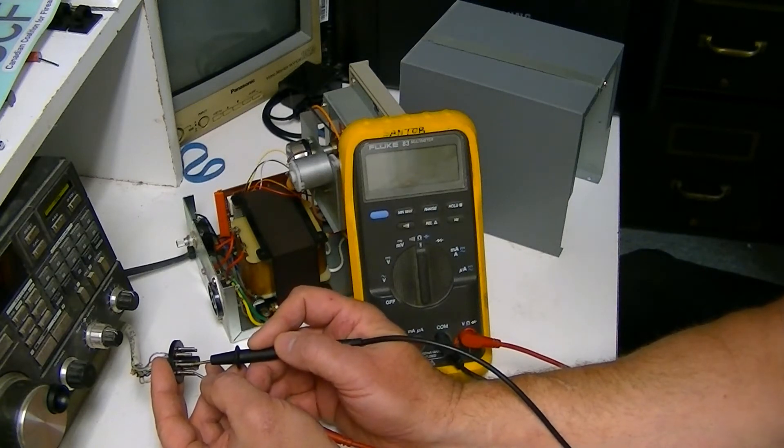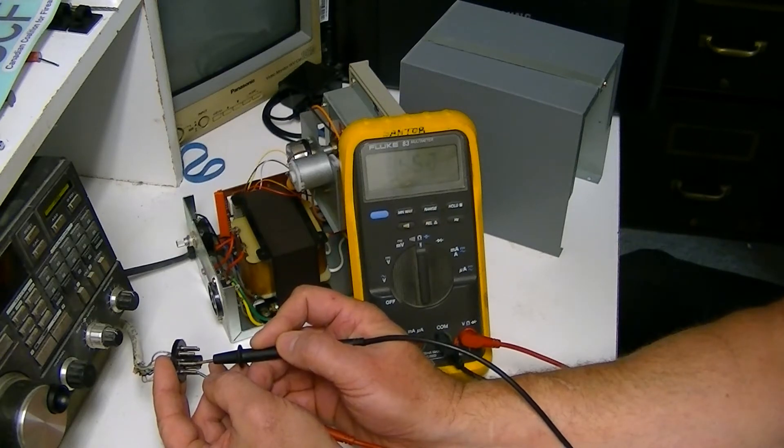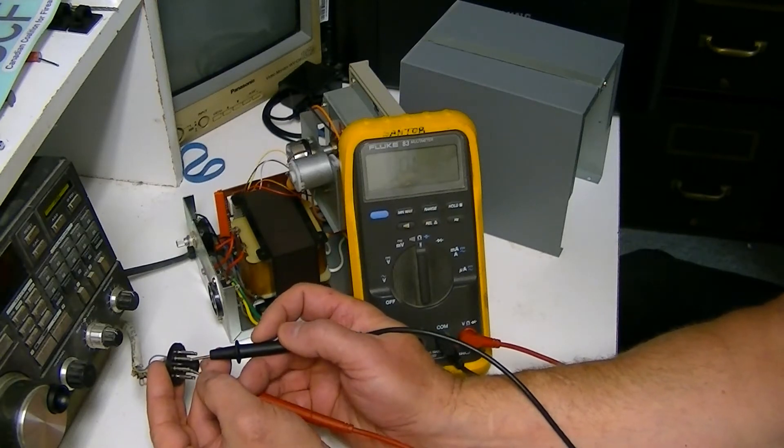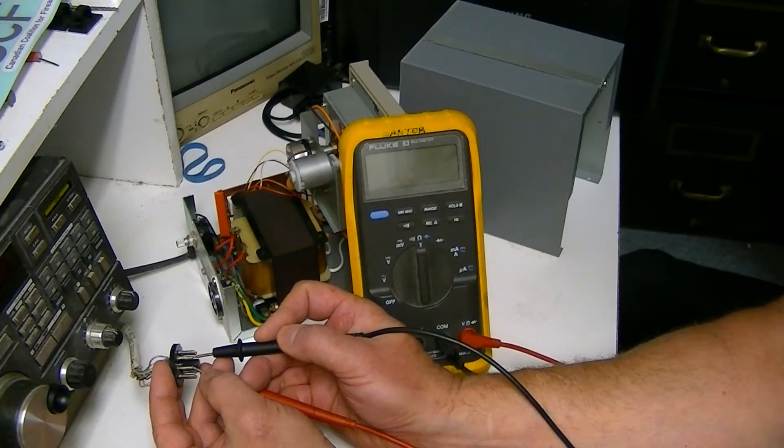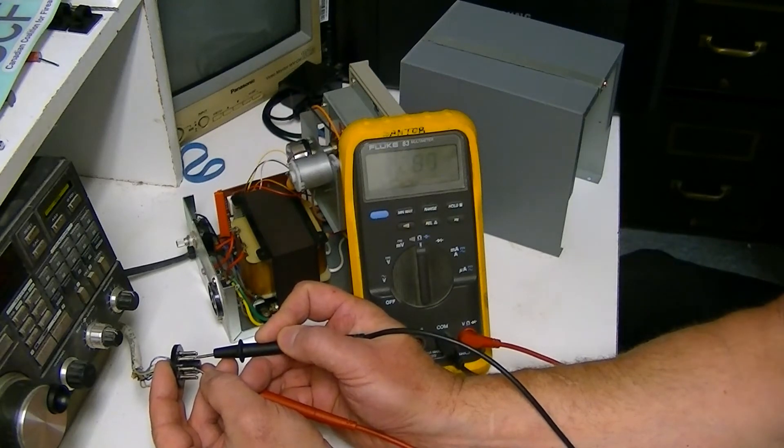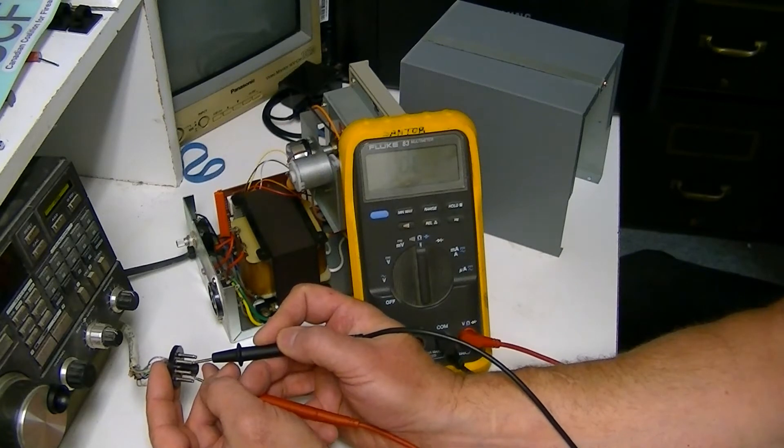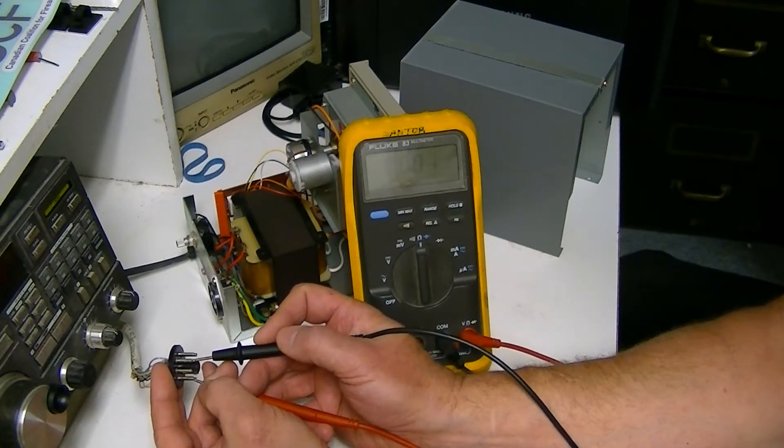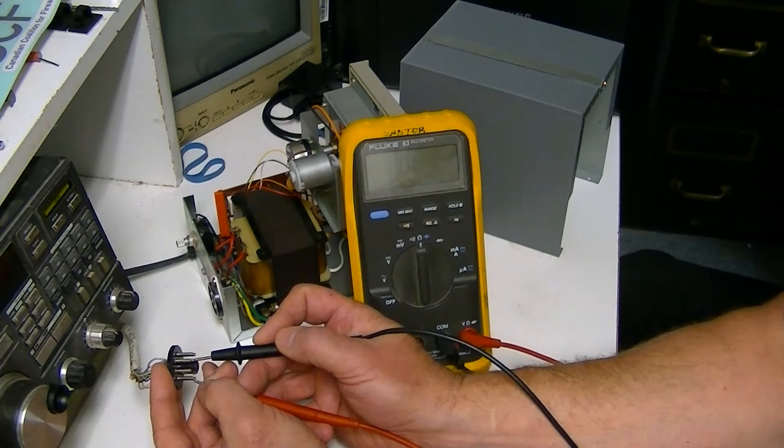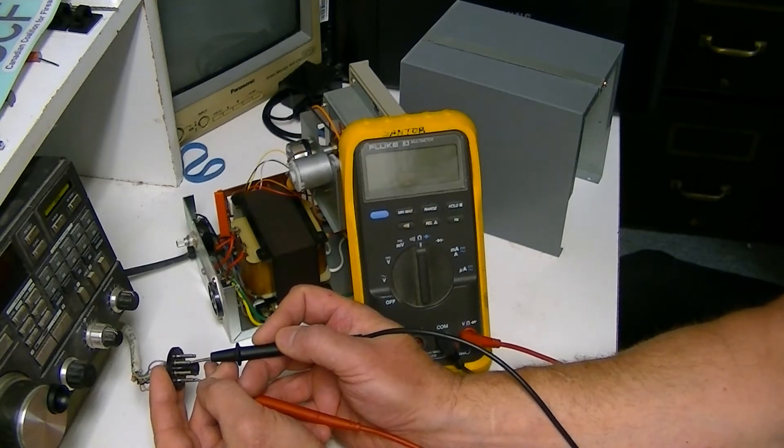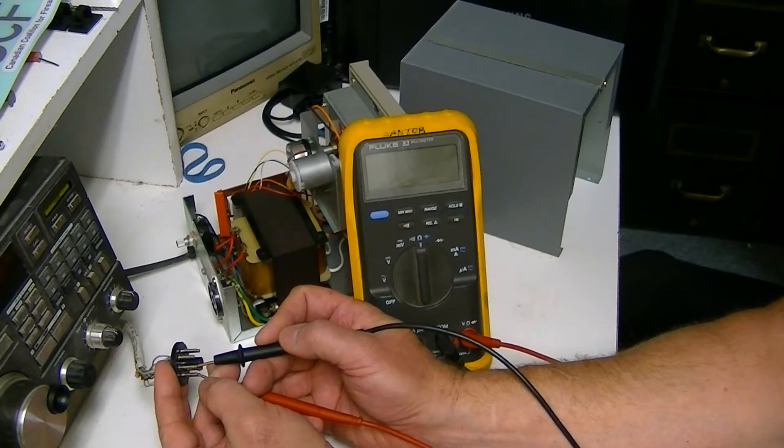If you go from your wiper to one side, you'll see one resistance. And the wiper to the other side, you'll see the other half making up your 600 ohms or so that you see across them.